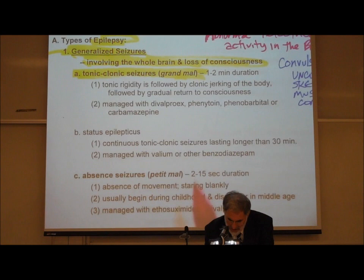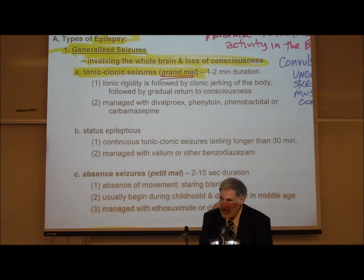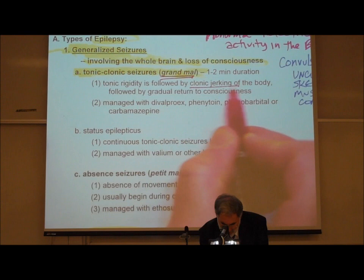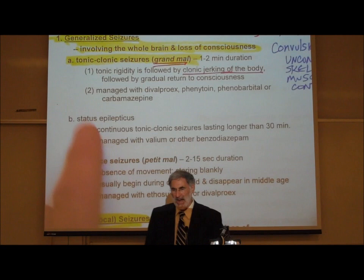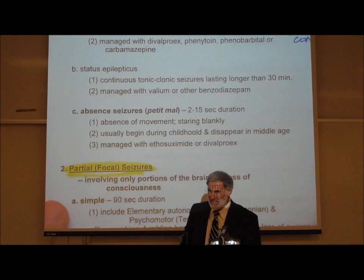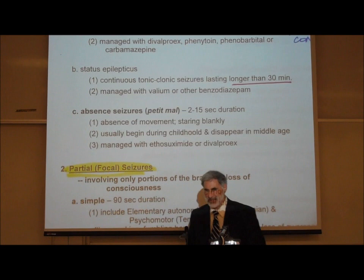The proper name is tonic-clonic; the old name was grand mal. The word grand mal is French for 'big bad' — a big bad seizure. This usually lasts a couple of minutes, with increased electrical activity in the brain resulting in convulsions and clonic jerking motions of the body. Some people have epileptic seizures that last longer than 30 minutes; that's called status epilepticus, which is clearly more severe and prolonged.